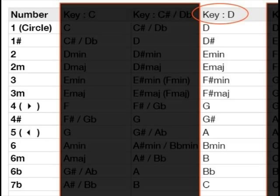Find the column on the conversion chart that matches the Song Key. This chart can be downloaded from the Cordica forum.